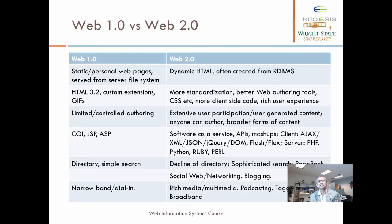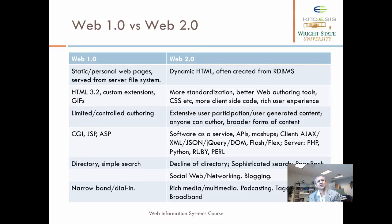In Web 2.0, there is extensive user participation. Anybody can write content and publish it as a blog, a comment, or a post on social media. These are called user-generated content. Earlier there were back-end technologies like CGI that allowed you to run programs the web server could execute. Then came Java Server Pages, ASP, and application server pages. Now there are Software as a Service paradigms, and Application Programming Interfaces — APIs — published for other applications to use. There are also mashups.